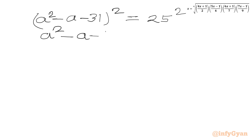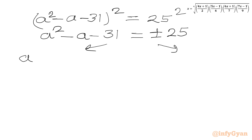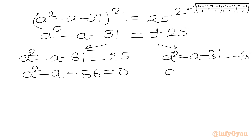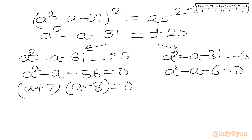This gives two equations. With +25: a²-a-56 = 0, and with -25: a²-a-6 = 0. We can factorize: (a+7)(a-8) = 0 and (a+2)(a-3) = 0.